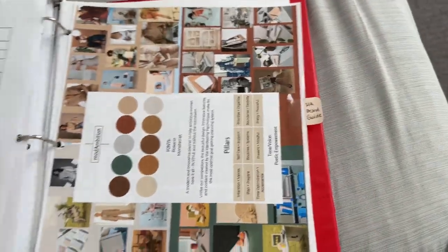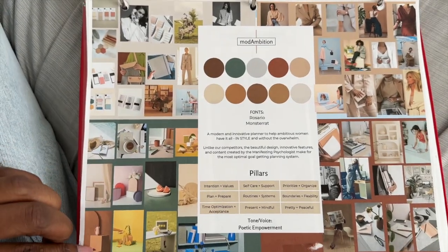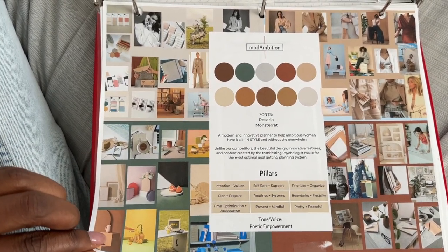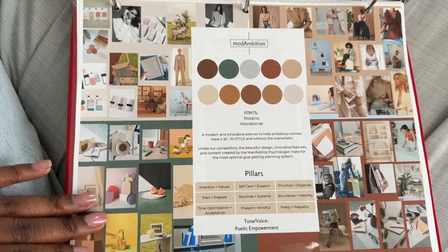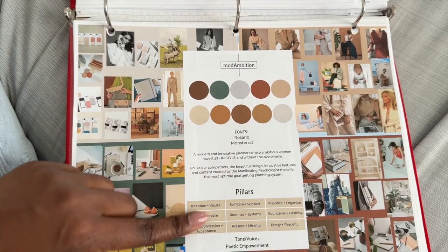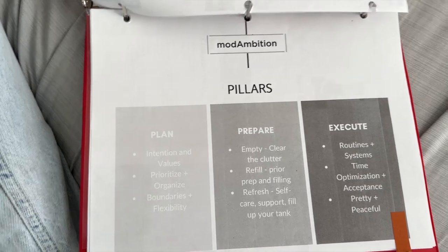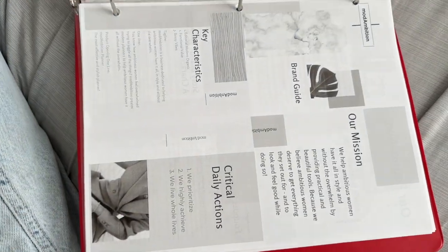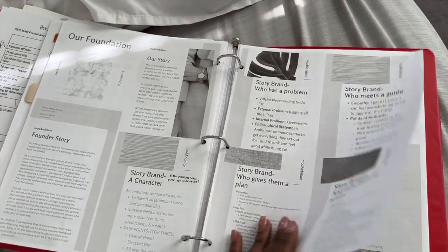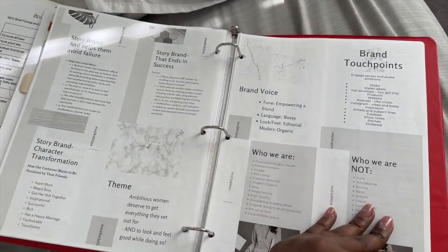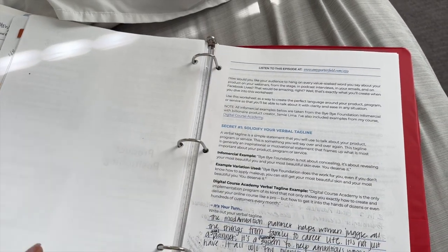This is my brand board for Mod Ambition. This is what I refer to when planning photo shoots. It has different sections for different aesthetics for the brand, as well as the colors, the fonts, the pillars, the tone of voice — all those things. I have the pillars laid out here as well as the complete brand guide. It has all of the stories, the brand voice — it's something that I created to make sure I stay on brand.